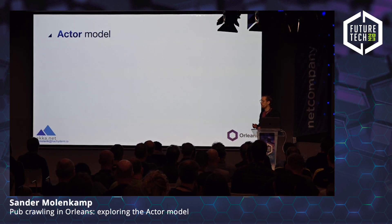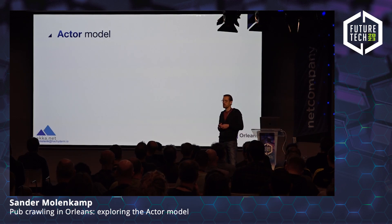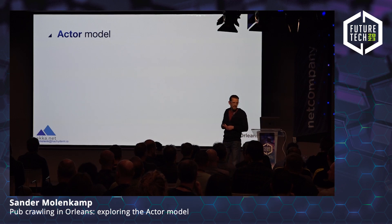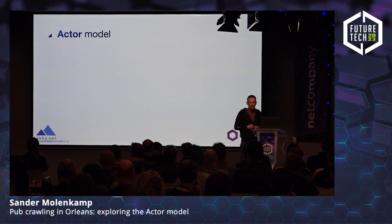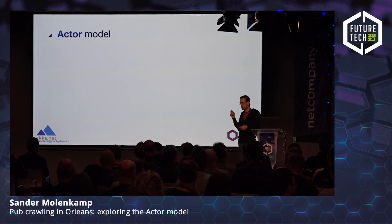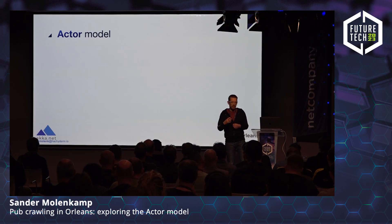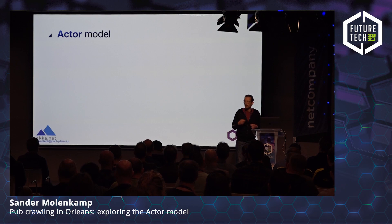There are many different implementations of the actor model. A really early one was Erlang, a programming language still in use today in the telecommunications sector. Another popular one is Akka, available for Java and Scala, and there's also a .NET version called Akka.NET. Because that's targeted towards .NET developers like us, and Orleans is also targeted towards .NET developers, I thought it would be nice to look at some of the differences between them.